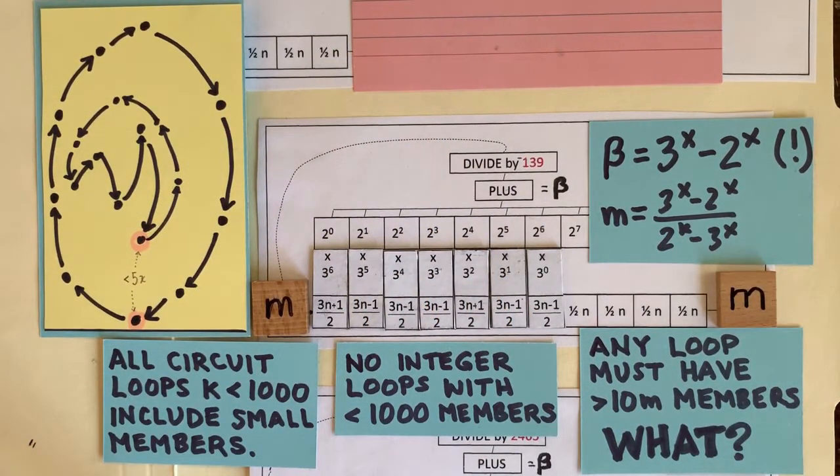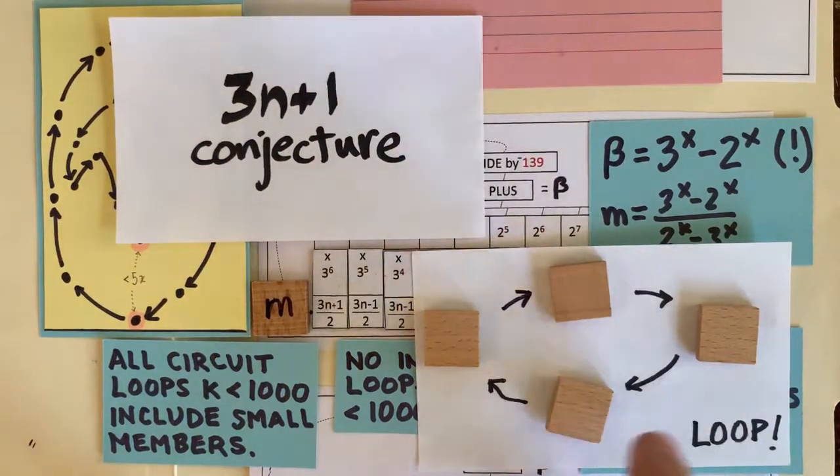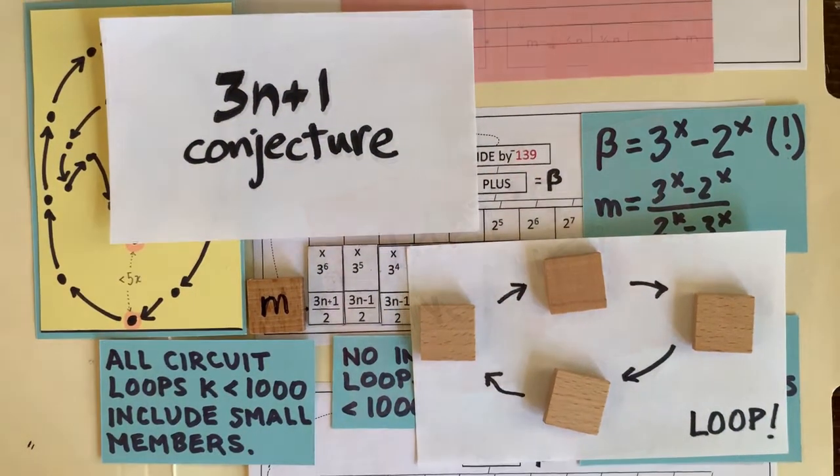So if we're hunting for a 3n plus 1 loop, then every member of that loop has got to be bigger than a billion billion and the loop itself has to have millions of members. That's insane.